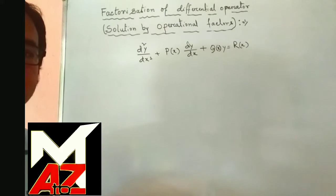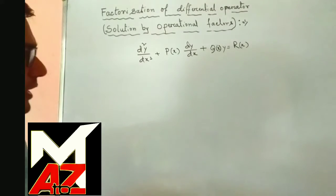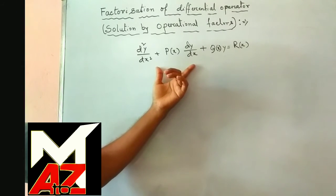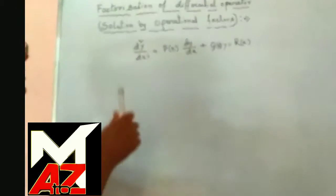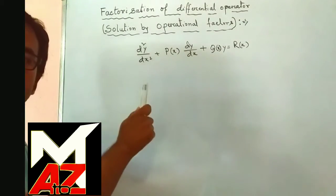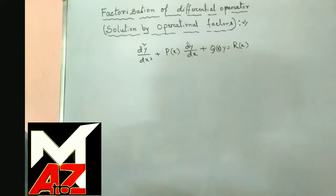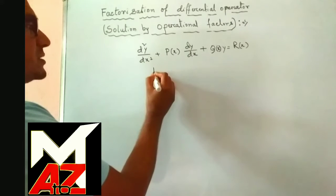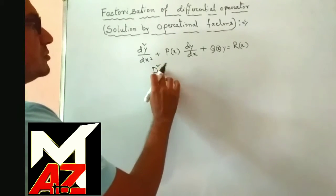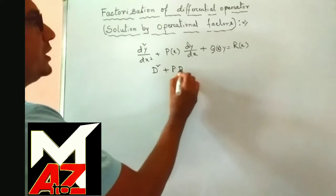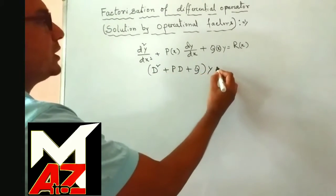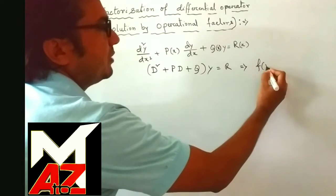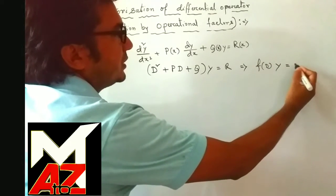To discuss this method, we take a general linear second order ordinary non-homogeneous differential equation. This is a general linear second order non-homogeneous differential equation. By using the differential operator, it can be written as (D² + pD + q)y = r, and it can also be written as f(D)·y = r.